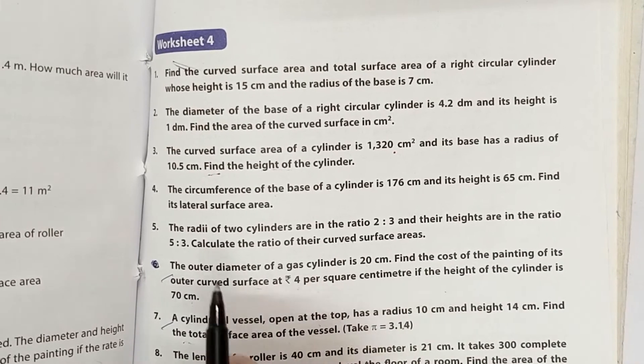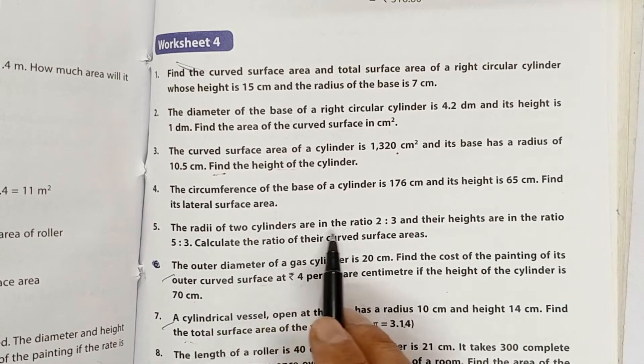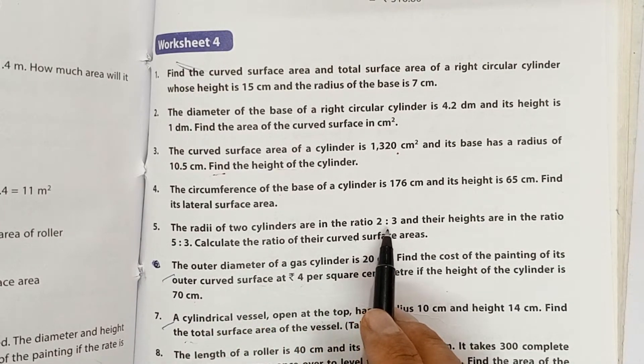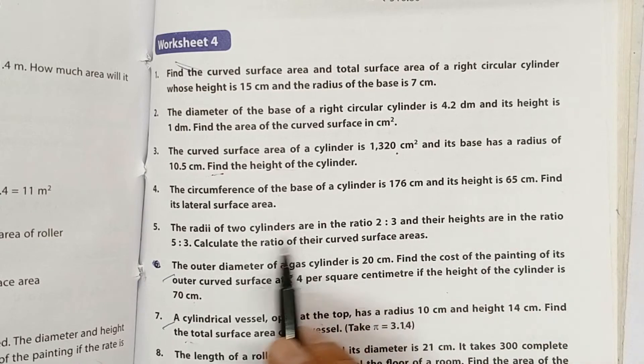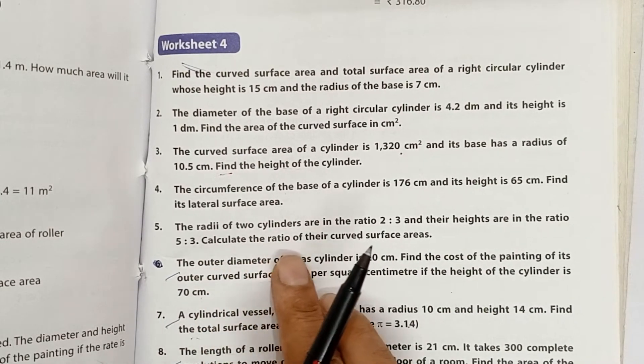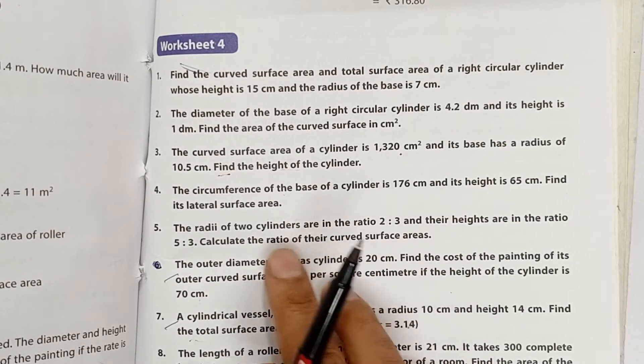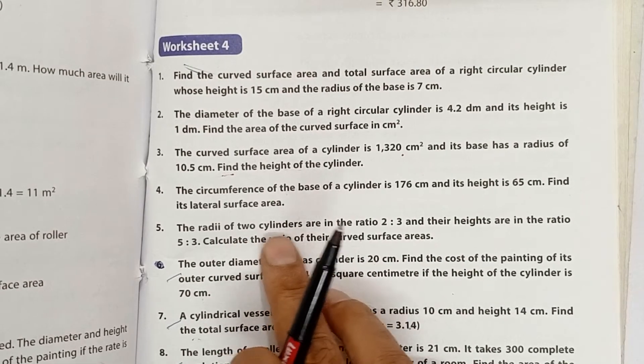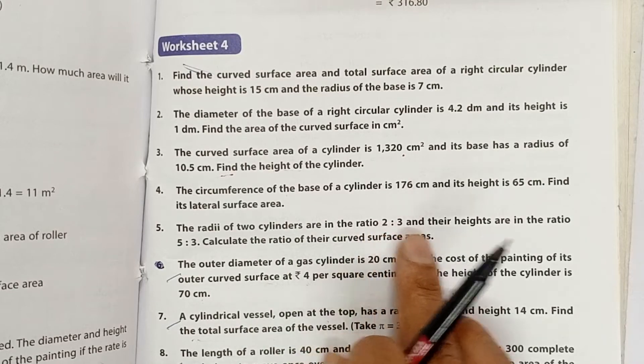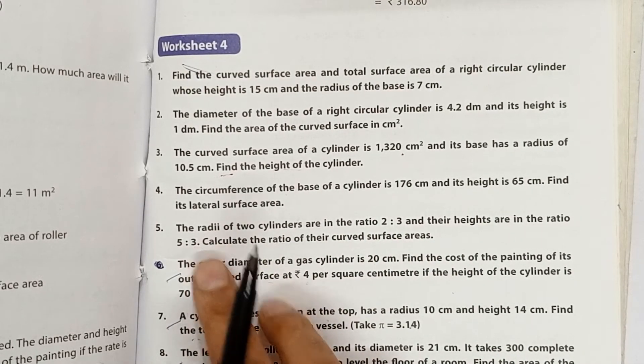I am showing you question number 5. The radii of two cylinders are in the ratio 2:3 and their heights are in the ratio 5:3. Calculate the ratio of their curved surface area. You can notice this is the ratio of the radii and this is the ratio of the heights.